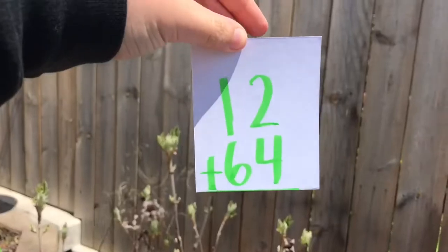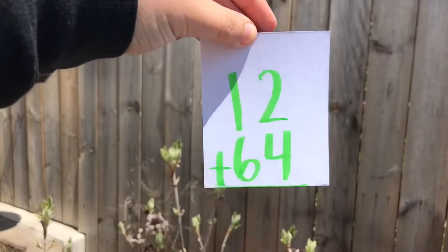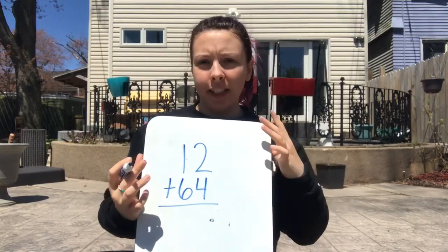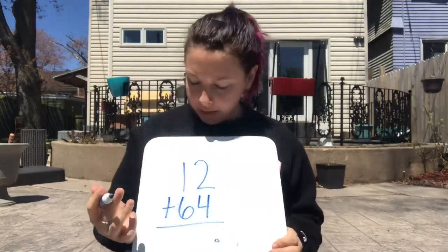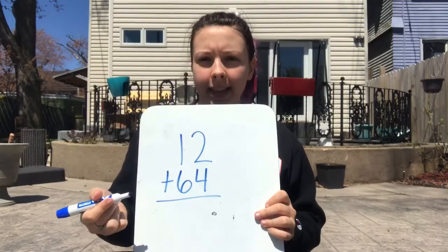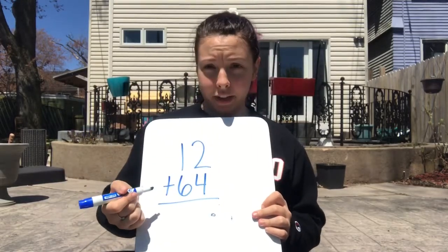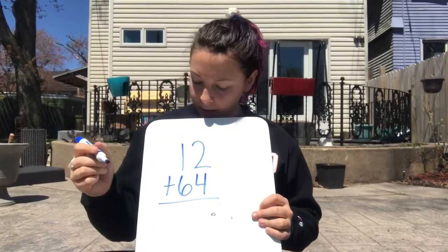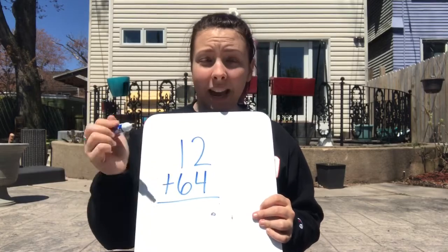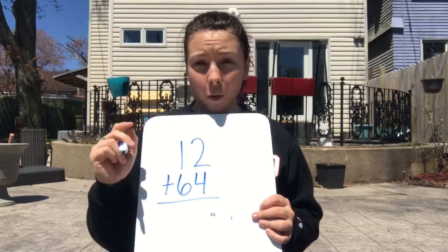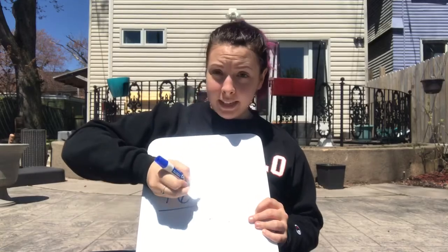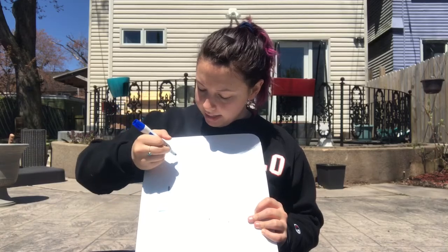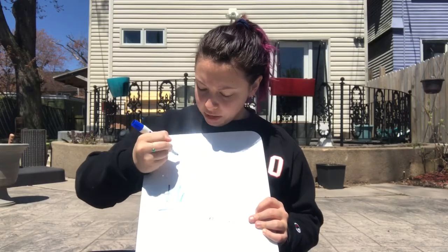This one says twelve plus sixty-four. All right friends, I'm gonna show you a different way to solve the problems today. So yesterday we solved the problem by drawing pictures, but today we're going to do it this way, and this is called the standard algorithm. It's a really fancy word, but it actually might make it a little bit easier for you. So when we're adding this way, we have to make sure that we are always stacking our place values.